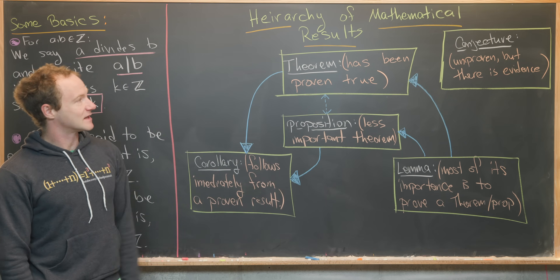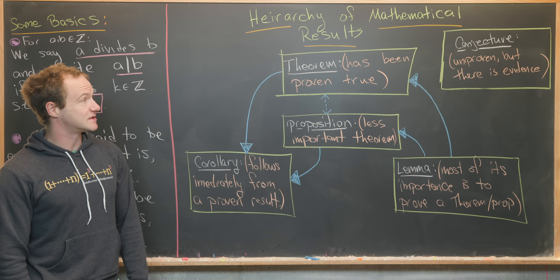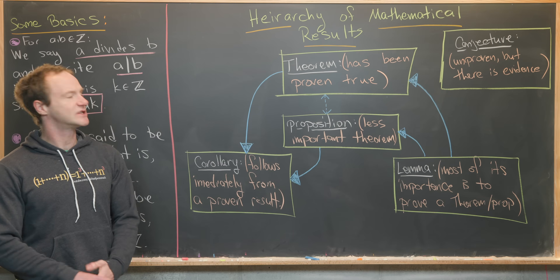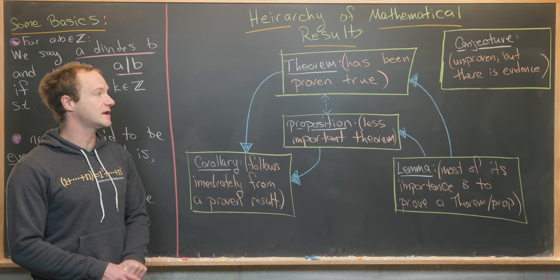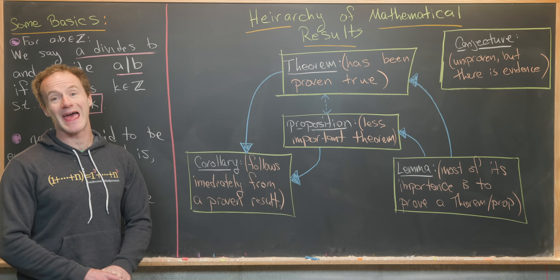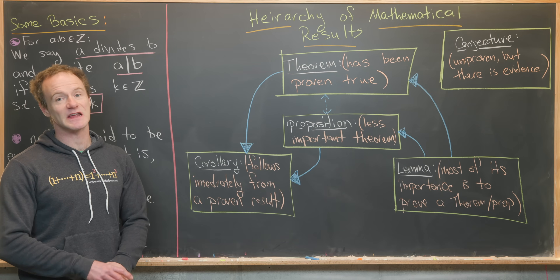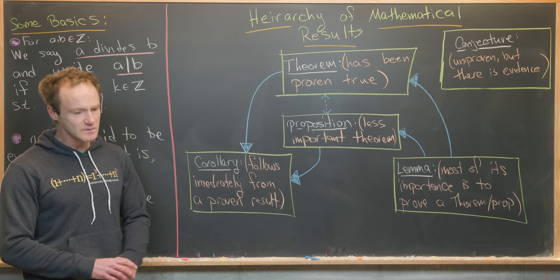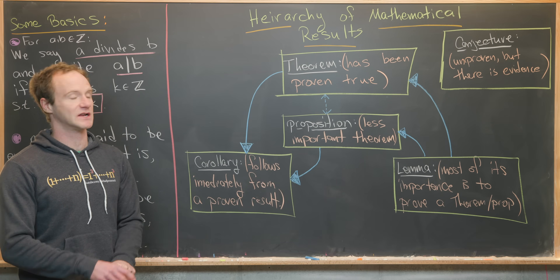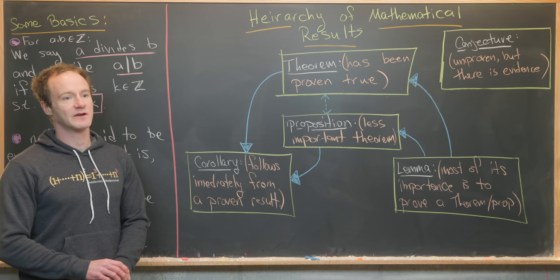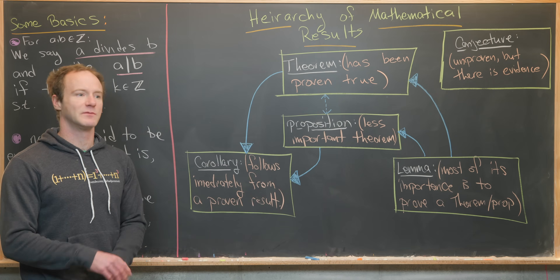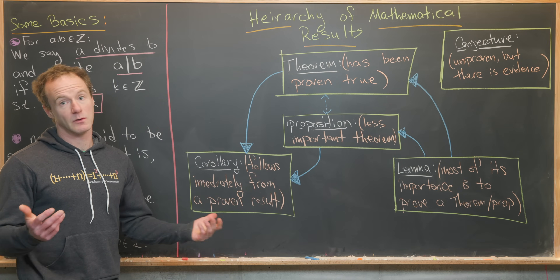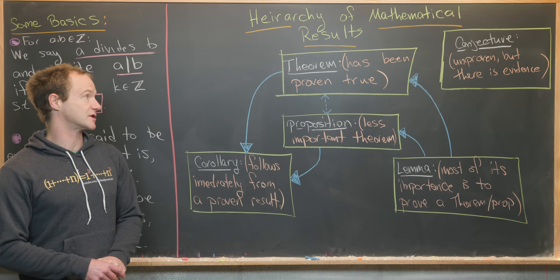Finally, we've got this notion of a conjecture. A conjecture is something that is unproven, but there is evidence to think that it is true — like the Goldbach conjecture, or Fermat's Last Theorem before it was proven about 20 years ago.